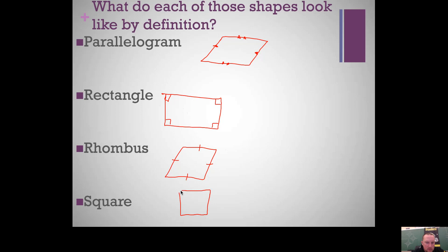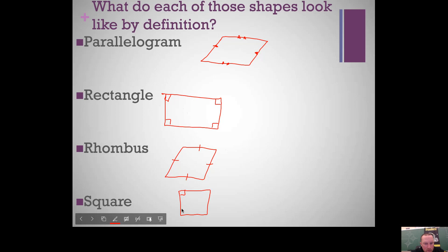Squares look like that, but just because it looks like a square doesn't mean it is. A square is both a rectangle and a rhombus, so it must have four right angles and four congruent sides. I call a square a 'rhom-tangle' — think of it as the offspring of a rectangle and a rhombus. It's a parallelogram, it's a rectangle, it's a rhombus; it sits underneath all three of those shapes.